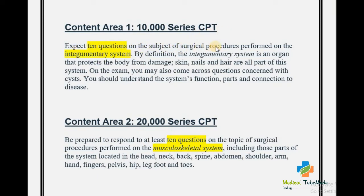Content Area 1 covers the 10,000 series of the CPT book. Expect 10 questions on the subject of surgical procedures performed on the integumentary system. By definition, the integumentary system is the organ system that protects the body from damage — skin, nails, and hair are all part of this system. On the exam you may also come across questions concerning cysts. You should understand the system's function, parts, and connection to disease. All surgical procedure CPT codes are assigned from the 10,000 series.